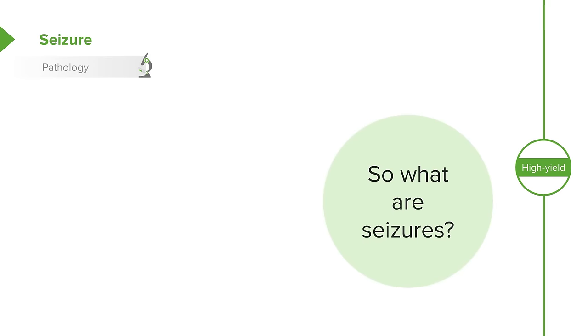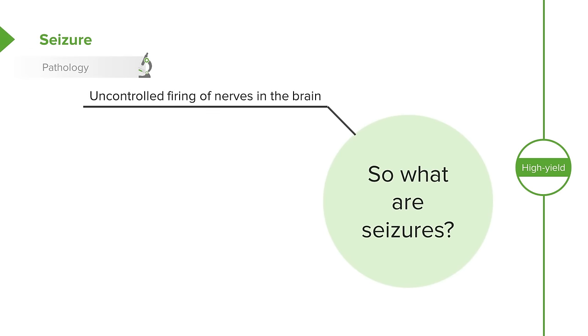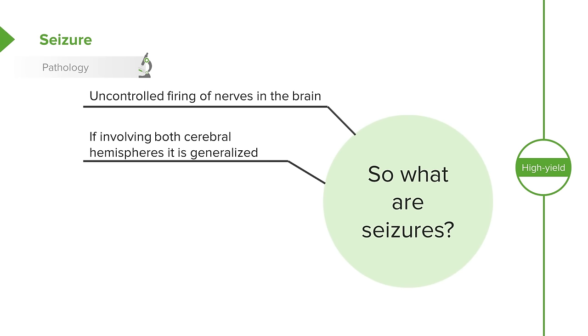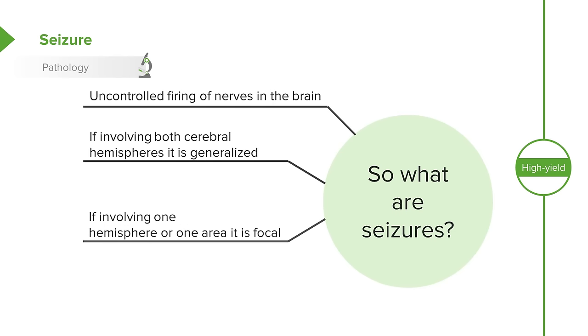Seizures are an uncontrolled firing of nerves in the brain. If involving both cerebral hemispheres, seizures are generalized — it's the whole body.